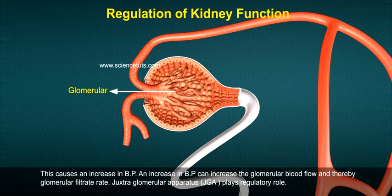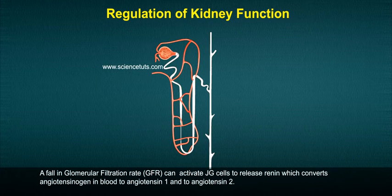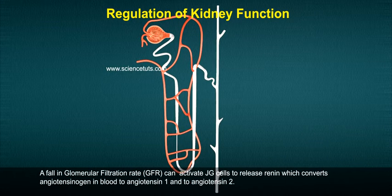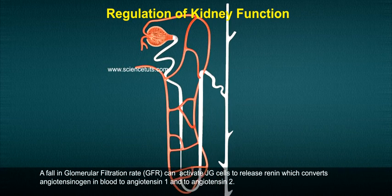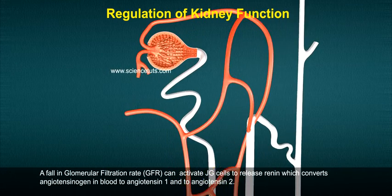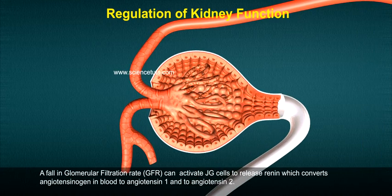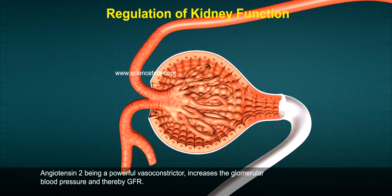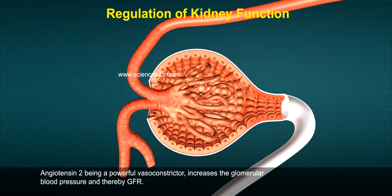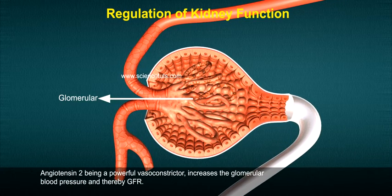The juxtaglomerular apparatus, JGA, plays a regulatory role. A fall in glomerular filtration rate, GFR, can activate JG cells to release renin, which converts angiotensinogen in the blood to angiotensin 1 and then to angiotensin 2. Angiotensin 2, being a powerful vasoconstrictor, increases the glomerular blood pressure and thereby GFR.